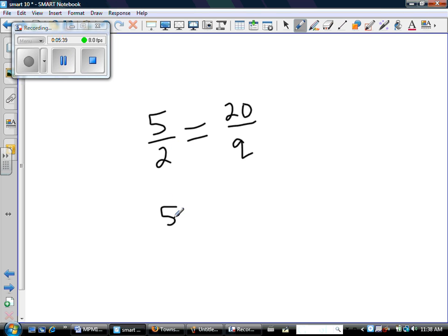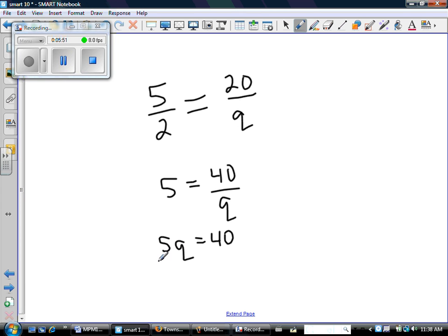So first, we're going to multiply everything by 2 to get rid of that fraction. Then we're going to multiply everything by q to get rid of that fraction. And I have this equation solving for q. I'm going to divide both sides by 5 and I'm left with q = 8. So that's the value of q.